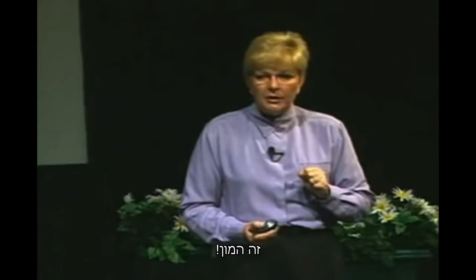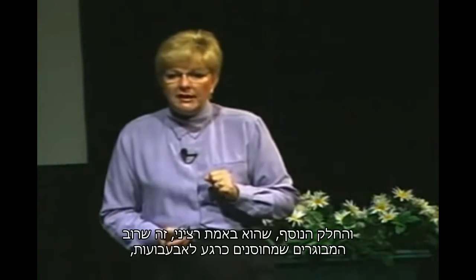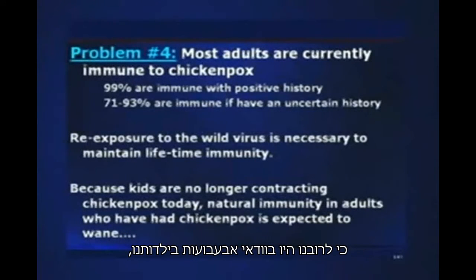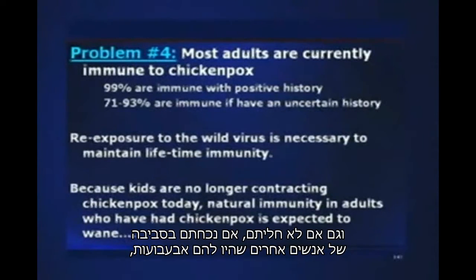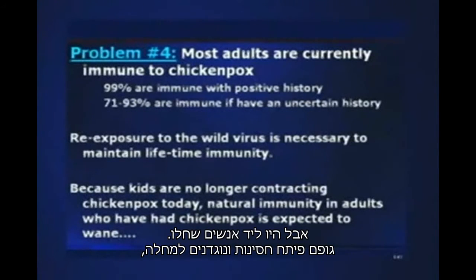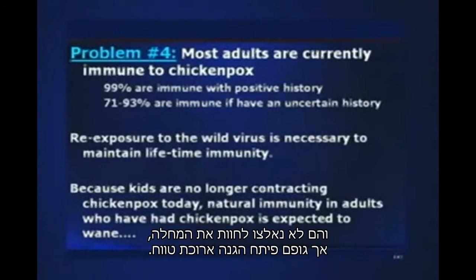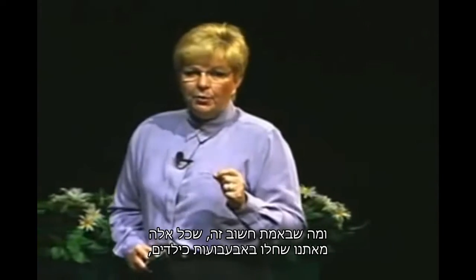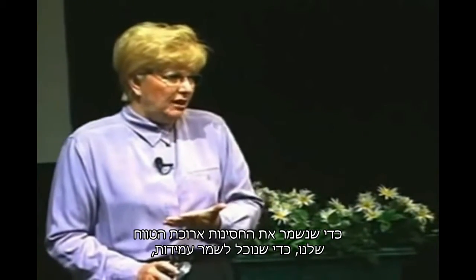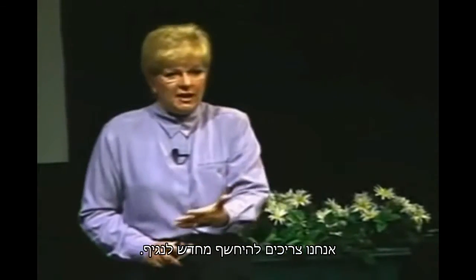That's huge. Most adults who are currently immune to chicken pox — because most of us had it as kids — maintain immunity. In fact, 99% are immune with a positive history, and up to 93% are immune even if they didn't have chicken pox but were around people who did. Their body made antibodies without manifesting the disease, providing long-term protection. Importantly, those of us who had chicken pox as children need re-exposure to the virus in order to maintain our lifelong immunity.